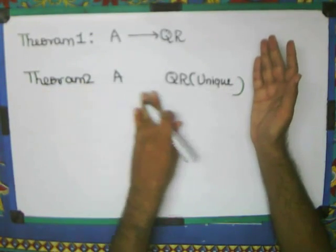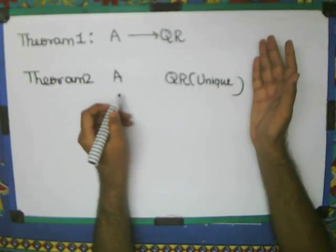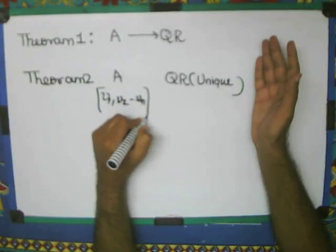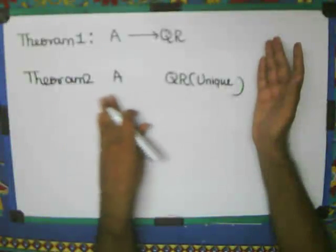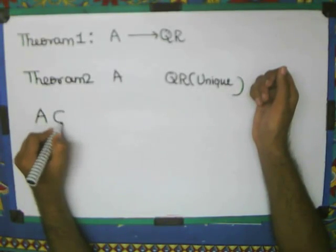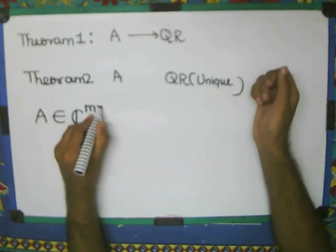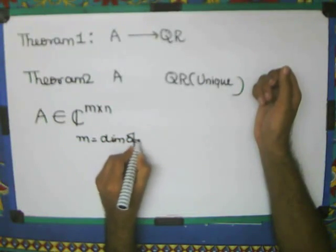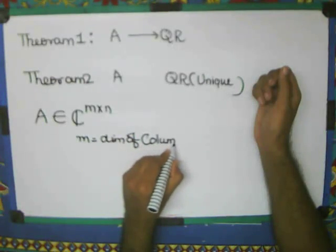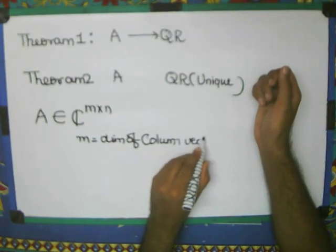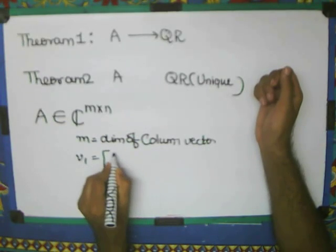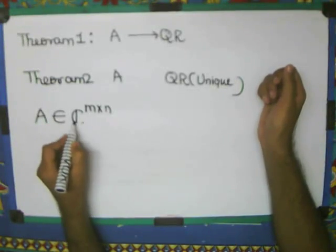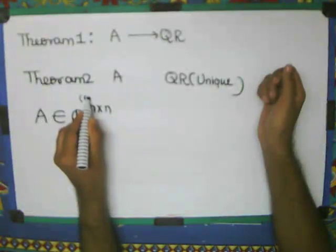And theorem 2 states that this QR factorization is unique for a non-singular matrix. Or if we have not a square matrix, then we can say that if the vectors are independent, then also we can get a unique one. Here A belongs to C, the complex M cross M. Everywhere M is dimension of column vector, each column vector. So v1 will have 0 to M minus 1 elements. This is the way we represent this matrix. A belongs to C where M is rows and columns.